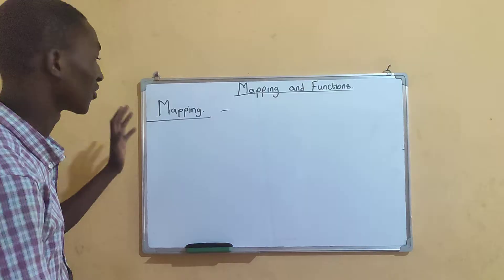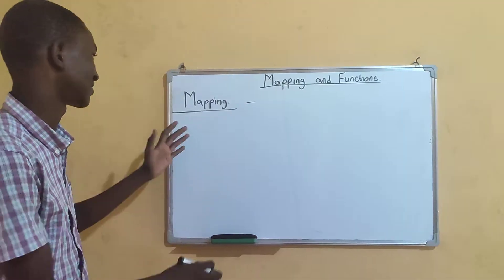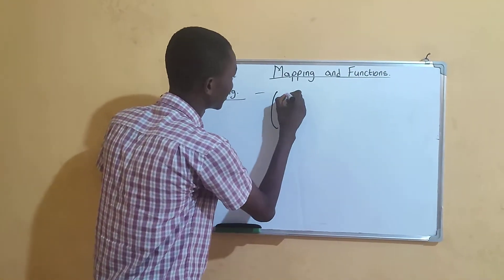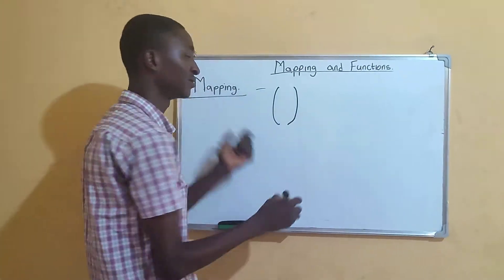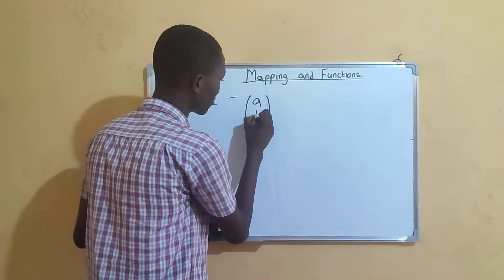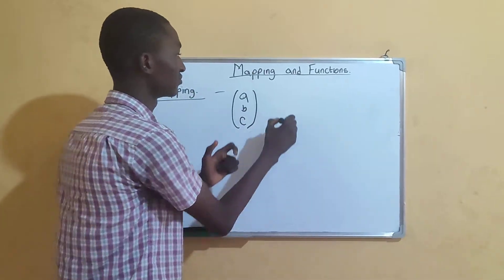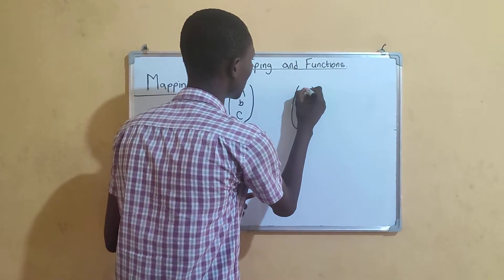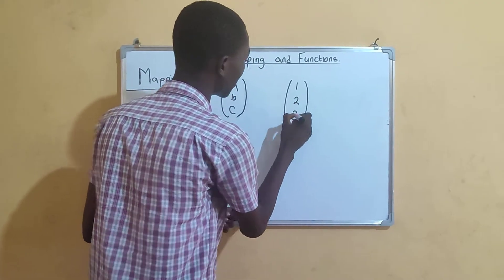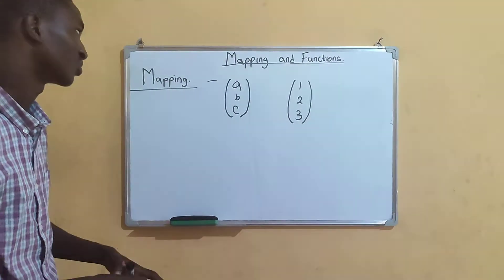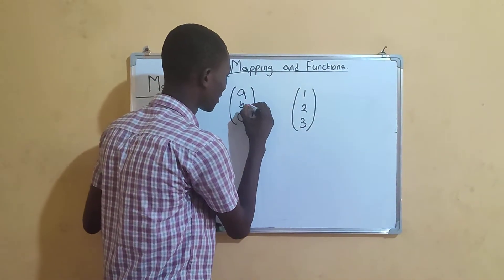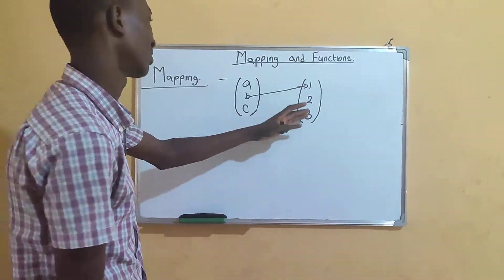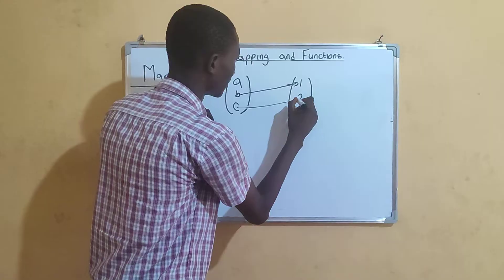There is a representation for mapping. At this side is the domain - you can have domains to be a, b, and c. At this other side are the code domains: one, two, three. There are arrows like this where a domain is linked to another domain.